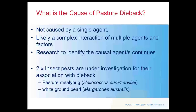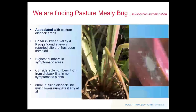There are two insect pests under investigation for their association with pasture dieback: pasture mealybug (heliococcus somovilii) and white ground pearl. In New South Wales, every sampled site so far has found pasture mealybug. We haven't found any ground pearls at this point in time, but they are something under investigation in Queensland where they have been found.